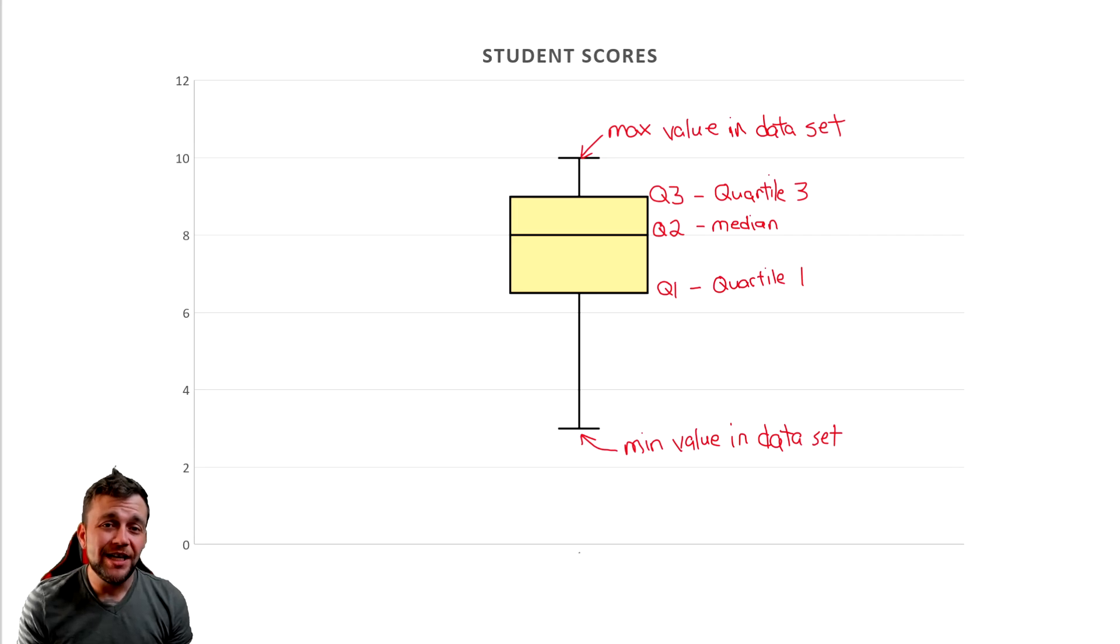The easiest way to understand these box plots is through the word median. Here we have our median at quartile 2. So quartile 2 is always the median of your data set. Quartile 3 is another way of saying the median of the top half of your data set. And quartile 1 is another way of saying the median of the bottom half of your data set.